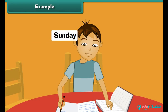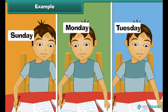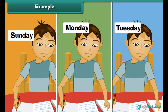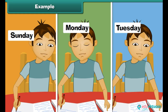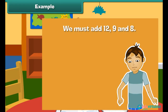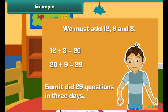Example: Sumit did 12 questions of mental addition on Sunday, 9 on Monday, and 8 on Tuesday. What is the total number of questions done by Sumit in three days? We add 12, 9, and 8. First, 12 plus 8 equals 20, then 20 plus 9 equals 29. Sumit did 29 questions in three days.